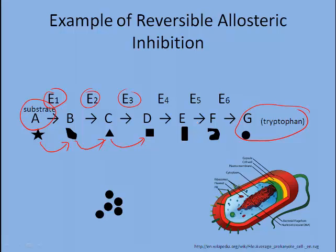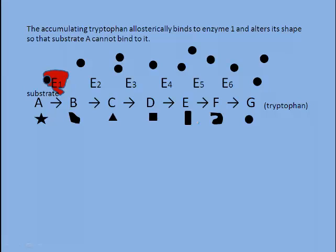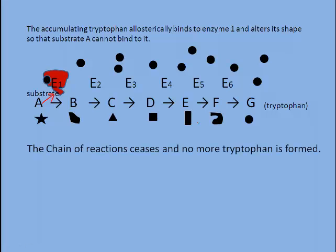When the protein to be built with tryptophan is in demand, tryptophan never accumulates because it's used immediately. But when the demand for the protein drops off, tryptophan begins to accumulate and it actually becomes part of a self-regulating mechanism. The accumulating tryptophan allosterically binds to enzyme number one and alters its shape so that substrate A can no longer bind to it. The chain of reaction ceases and no more tryptophan can be formed.